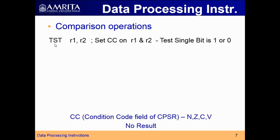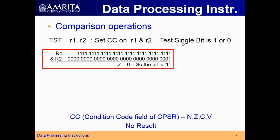The next comparison instruction is TST, which stands for test. The basic use of TST is to test whether a single bit is 1 or 0 in a register. The operation performed is R1 AND R2 — since it is a comparison instruction, the result is not stored. The condition code fields are set based on R1 AND R2. Example: R1 is 0xFFFF...1 (with last bit 1), R2 is 0x00001. Bitwise AND: 1 AND 1 equals 1. The result is 0x00001, but result is not stored.